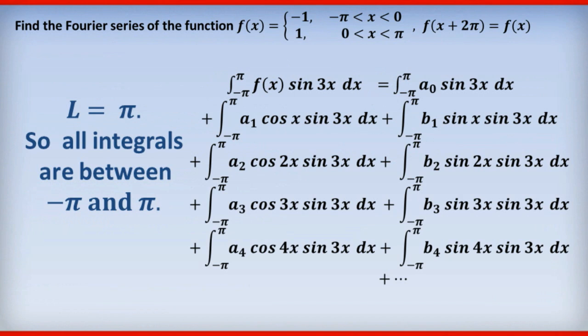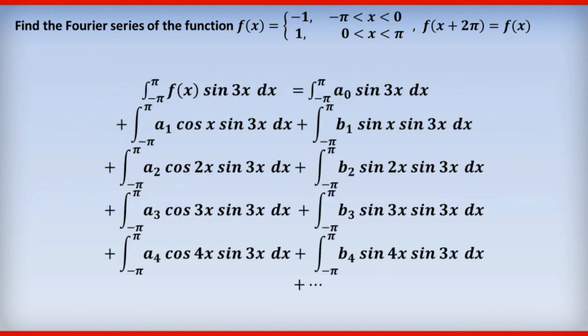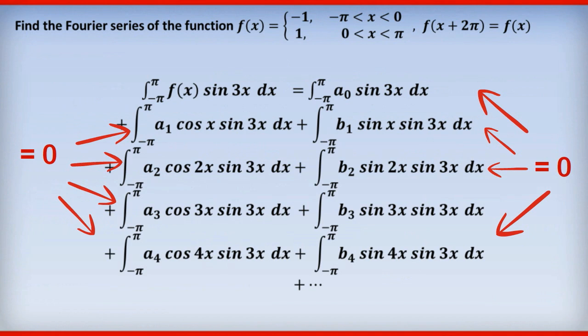Now to proceed further, we need to realize that most of what's on the right-hand side equals zero. And this is a very beautiful and useful property of sine and cos. And it really tells us why the Fourier series uses the sine and the cos functions.